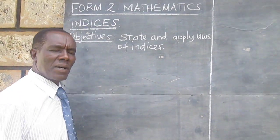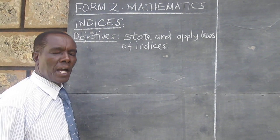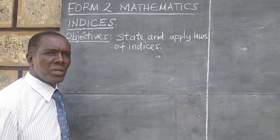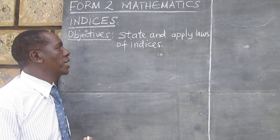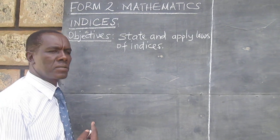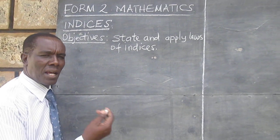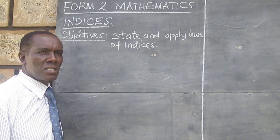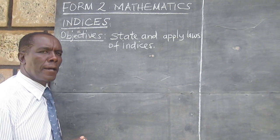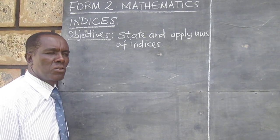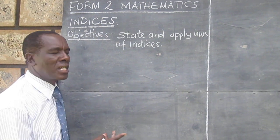Hello there. In our lesson today we would like to look at Form 2 work, and I have picked indices following requests from viewers. In this lesson we would like to remind ourselves some of the laws of indices, how they come about, and how we can apply them in simplifying given expressions. Later we'll be able to apply the same in the topic on logarithms, so this is a very important topic — a foundation for topics like logarithms in Form 2 and Form 3.